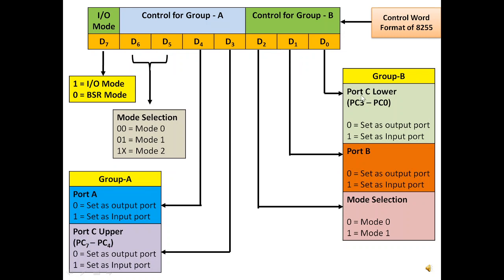In Group B, we have Port C lower and Port B. When the D0 bit is set to 0, Port C lower will act as an output port. If it is set to 1, Port C lower will act as input. To remember this, note the similarity of 0 with output (O) and 1 with input (I). So 0 means output and 1 means input — applying 0 logic at D0 sets Port C lower as output port.